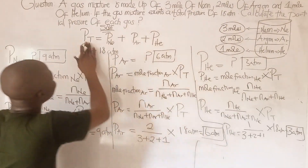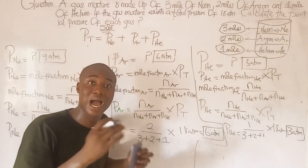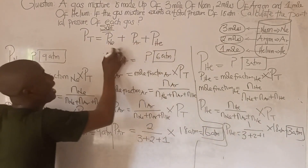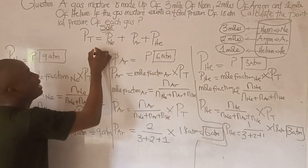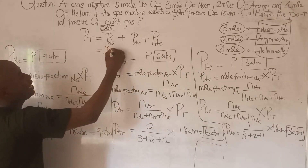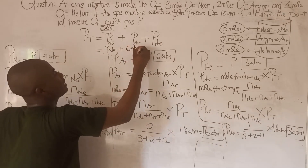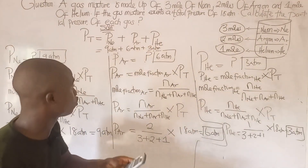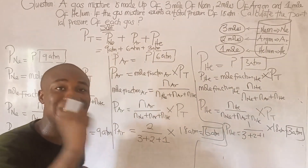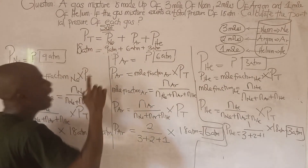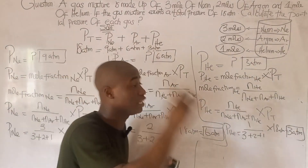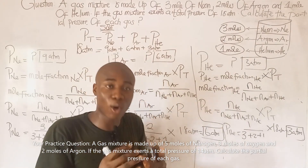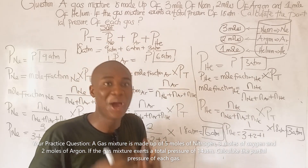To verify our answers are correct, we add all the individual partial pressures: partial pressure of Neon (9 atm) plus partial pressure of Argon (6 atm) plus partial pressure of Helium (3 atm) equals 18 atm. This matches the given total pressure, confirming all answers are correct. If you find this video helpful, click the subscribe button and share this lesson with your friends.